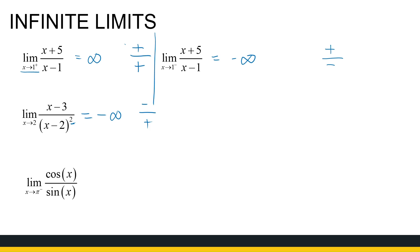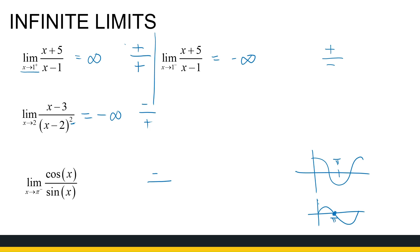Now let's look at some trig functions: cos(x) divided by sin(x), as x goes to π. As x approaches π from the negative side, cos goes towards −1, so the numerator is a negative number. Sine approaches zero, but it's still positive for x approaching π from the negative side. So this fraction goes to minus infinity. That is the graph of cot(x) — you can compare it to that.